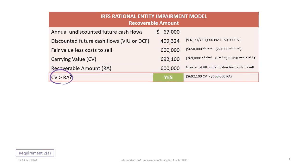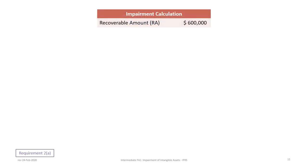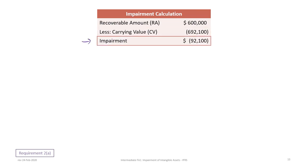Now we ask: is the carrying value greater than the recoverable amount? Yes, because the carrying value of $692,100 is greater than the recoverable amount of $600,000. If the carrying value is greater than the recoverable amount, the asset is impaired — the recoverable amount is not enough to cover the current carrying value. The impairment calculation gives us recoverable amount $600,000 minus carrying value $692,100, resulting in impairment of $92,100.